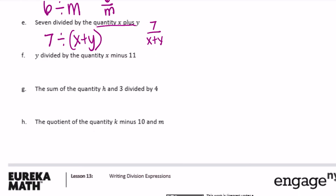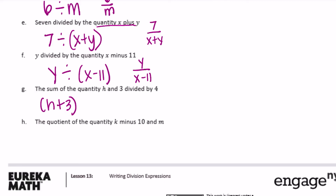y divided by the quantity x minus 11: written as y ÷ (x − 11), or y over x minus 11. The sum of the quantity h plus 3 divided by 4: since sum means plus, that's (h + 3) ÷ 4, or h plus 3 over 4.